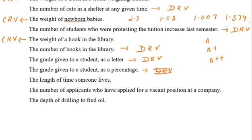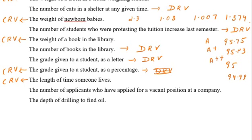Example 11: the grade given as a percentage — it could be 95.75, 95.03, or 94.99 — so this is a continuous random variable. Example 12: the length of time someone lives — time is continuous, so this is a continuous random variable. Example 13: the number of applicants for a vacant position — 0, 1, 2, 3 and so on — discrete. Example 14: the depth of drilling to find oil — depth is continuous. These are several examples covering discrete and continuous random variables.